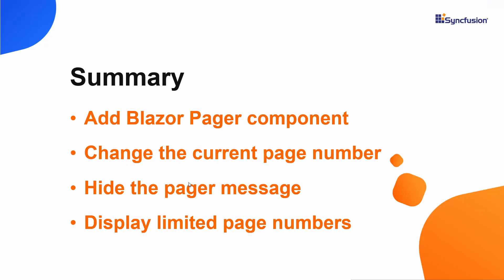In this video, we saw how to create a Blazor WebAssembly app using Visual Studio 2019 and add a Syncfusion Blazor Pager component to it. We discussed how to split ListView component data items and display them in pages. We also saw how to hide the pager message, change the current page value, and display limited page numbers. If you would like to see the working code of this example, you can download it from the GitHub link in the description below. I have also provided a link where you can see if you qualify for a free community license to use all our Blazor products. If you found this video useful, don't forget to click the like button and subscribe to our channel to watch more videos like this. Thanks for watching.